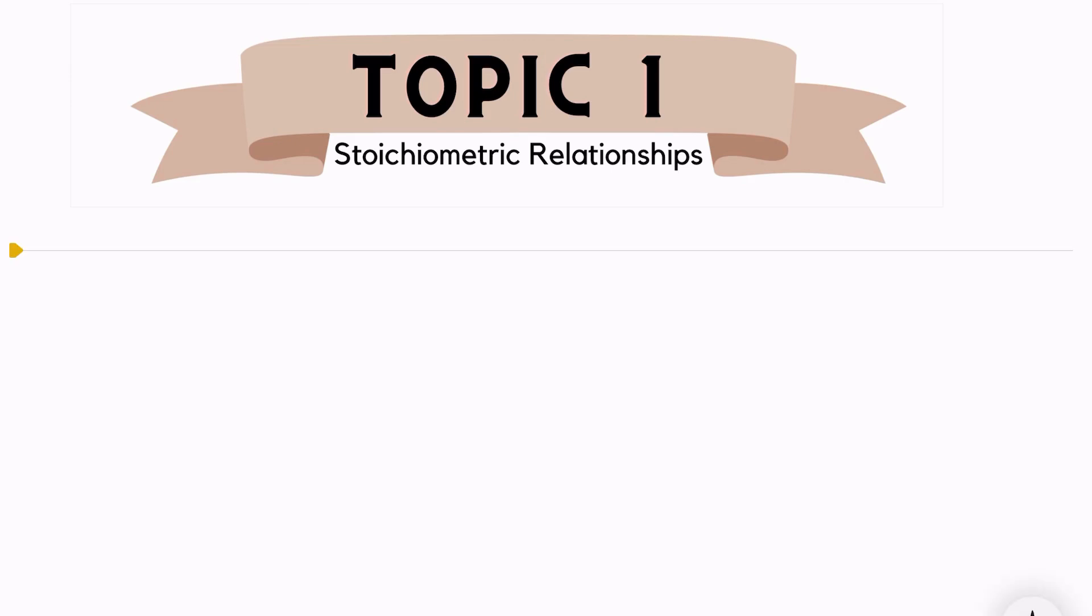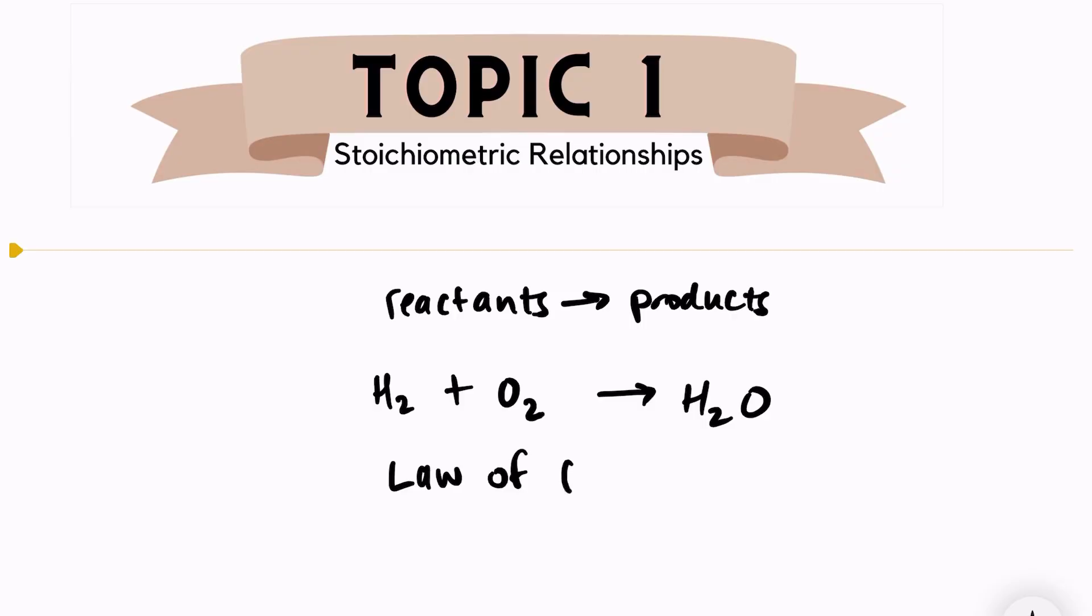Topic 1 looks at stoichiometric relationships. We need to remember the basic formula for any chemical reaction has the reactants on the left, yields products. An example of a chemical equation could be the formation of water: hydrogen plus oxygen yields H2O. Don't forget, because of the law of conservation of mass,